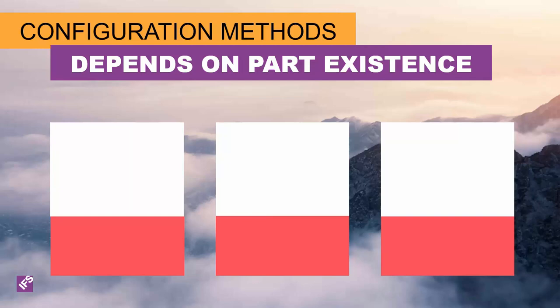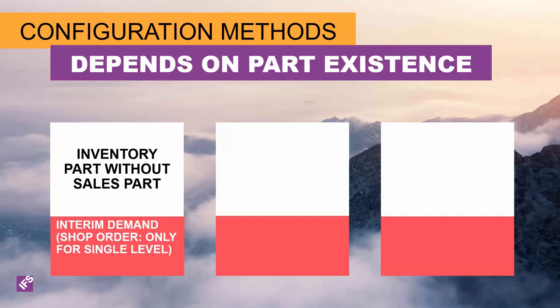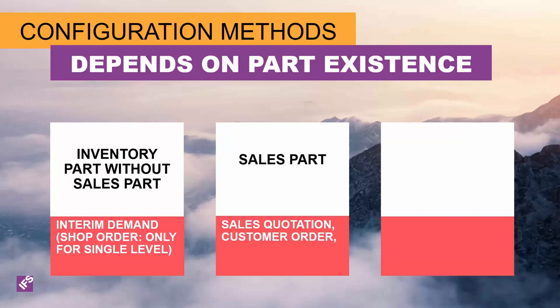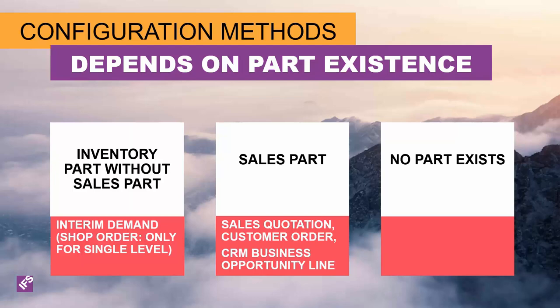You can perform product configuration in three different fashions. First, for a non-sales part — such as when developing features and options for a product — you can use an interim demand header for multi-level structures or a shop order type prototype for single-level structures. Second, for a sales part, you can create the configuration from a sales quotation, a customer order, or even a CRM business opportunity. Third, for developing a new or incompletely configured product not yet ready with all BOM, routing, and part number information, you can use product estimate bid management. This means there is tremendous flexibility in deploying the product configurator.